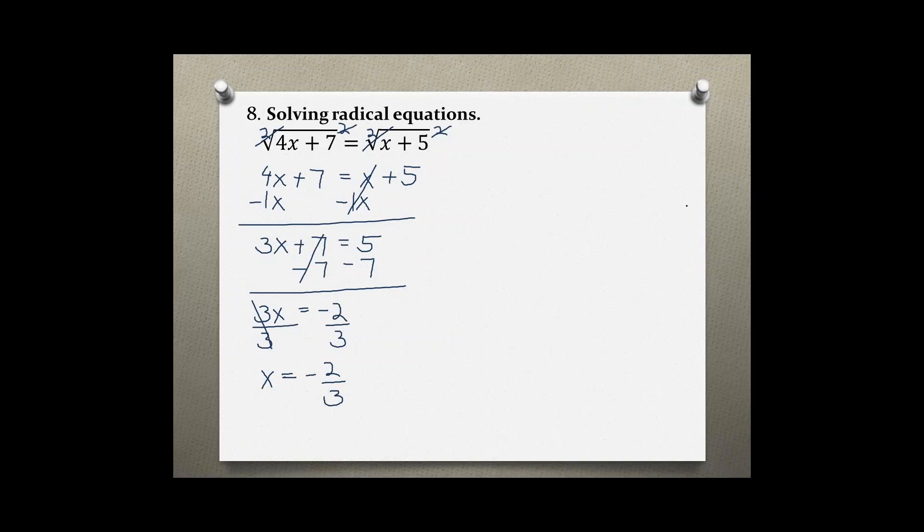You do not need to convert it into a decimal but it's going to be a little bit harder now to check if our solution is correct. So plugging it back into the original problem I get the square root of 4 times negative 2 over 3 plus 7 and that should equal the square root of negative 2 over 3 plus 5.